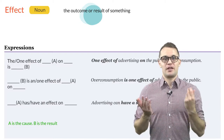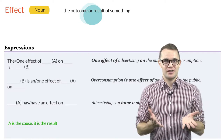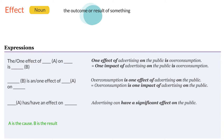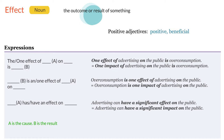We can replace effect with the noun impact, so we can change the above examples like this: one impact of advertising on the public is overconsumption, or overconsumption is one impact of advertising on the public, or advertising can have a significant impact on the public. When we use the nouns impact and effect, we often use positive adjectives like positive and beneficial, and we can use negative adjectives as well like negative, adverse, harmful, or detrimental.